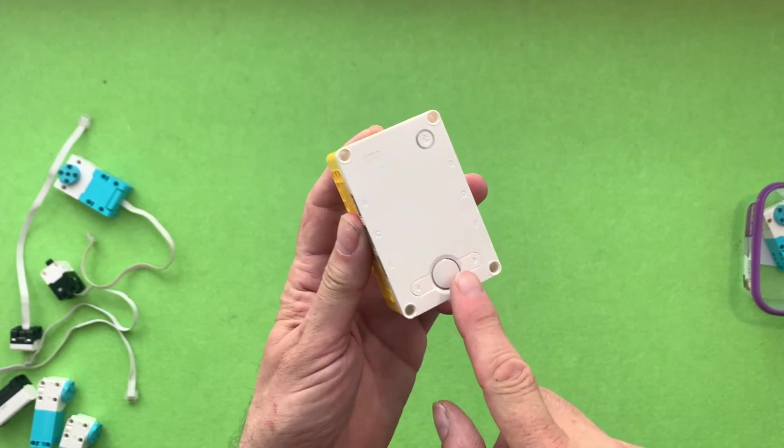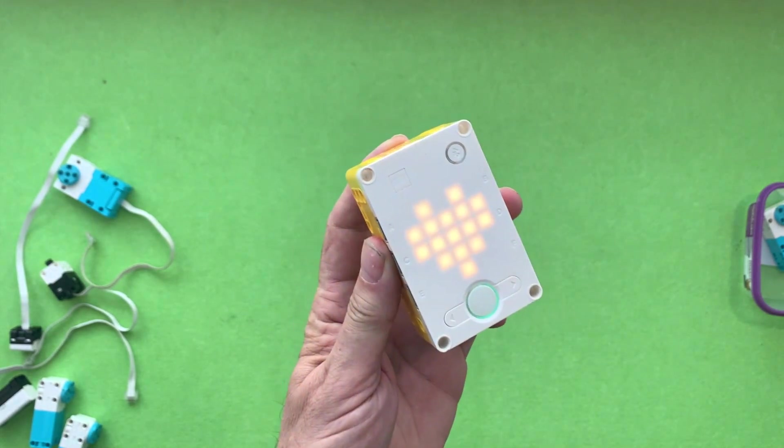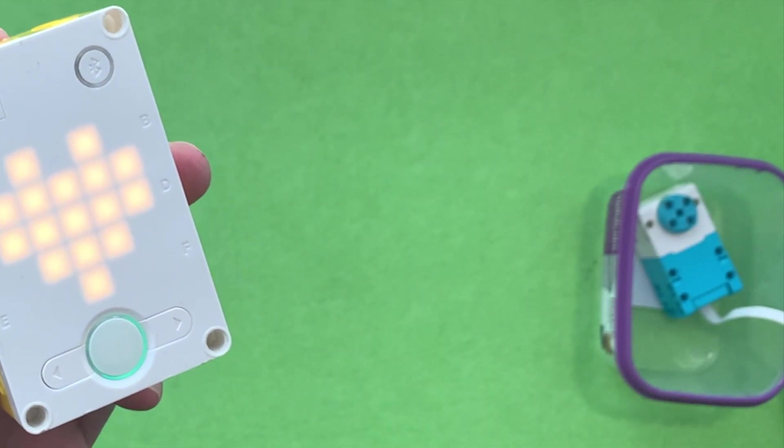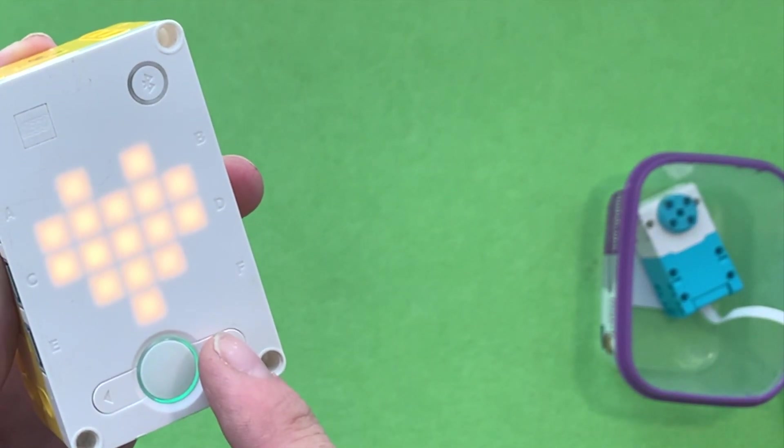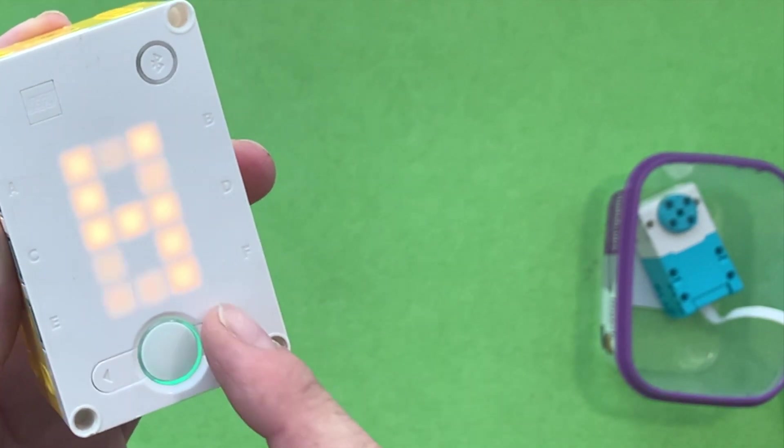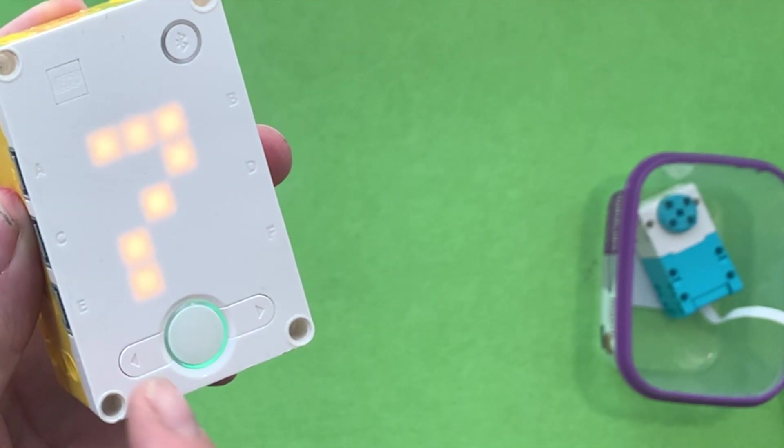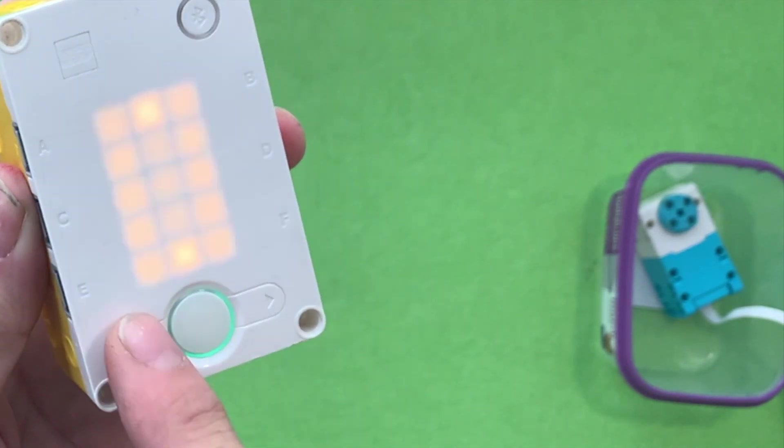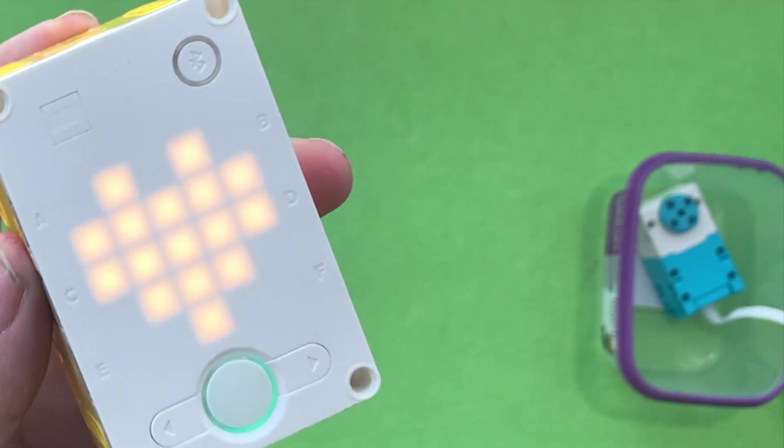When you first turn on your Hub using the power button, you'll notice the heart should come straight up. You can use the arrow keys to scroll through any stored programs that you might have put on there already from your device when you've coded it, or you can scroll back to get to the Heart Mode.